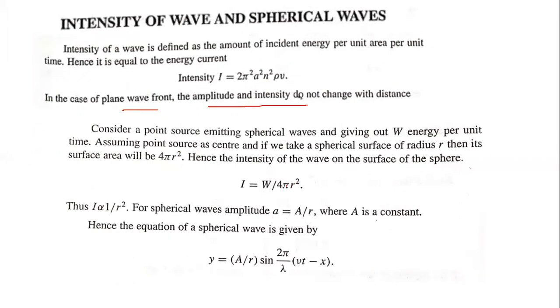Consider a point source. Intensity equals W by 4πr². W is energy per unit time. Power is constant, the area is divided. So the intensity is inversely proportional to r². For spherical waves, amplitude A equals A by R. Hence the equation of the spherical wave front is given by y equals A/R into sin 2π/λ times vt minus x.